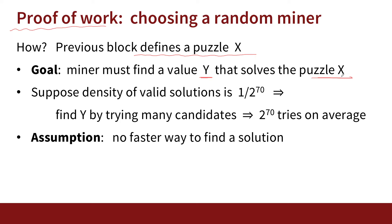So how does the miner find the solution? Let's suppose that the density of solutions is about 1 in 2 to the 70 — that's roughly the density in the Bitcoin proof of work system now. So 1 in 2 to the 70 values of Y is a valid solution to the problem. The miner is going to try lots and lots of random Ys until he finally finds one that solves the puzzle, trying over and over again until he finds a Y that works. That's roughly going to take 2 to the 70 tries.